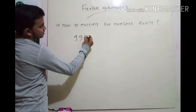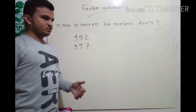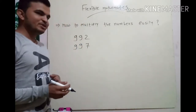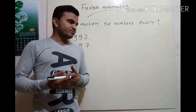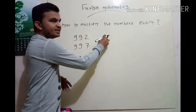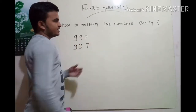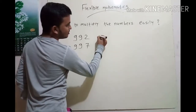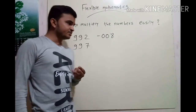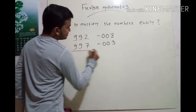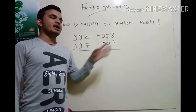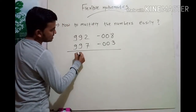Let's take 992 and 997. If you multiply these two numbers by ordinary method it will be too long, but by using this trick it will be very easy. 992 is less than 1000 by 8. Since 3 digits are required, we write minus 008. And 997 is less than 1000 by 3, so we write minus 003. Cross subtraction: 992 minus 3 or 997 minus 8 gives 989.